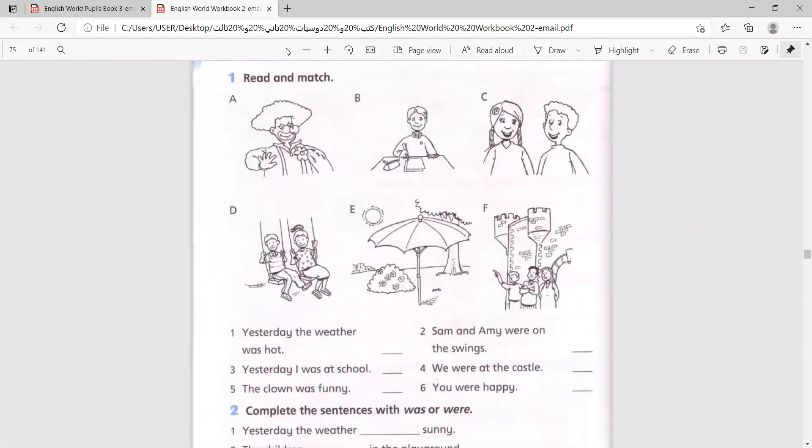Let's read and match. Match the picture to the sentence. Pictures have letters, sentences have numbers. Number one: Yesterday the weather was hot - this is letter E. Number two: Sam and Amy were on the swings - correct, B. Number three: Yesterday I was at school - B. Number four: We were at the castle - F. Number five: The clown was funny - A. Number six: You were happy - C.